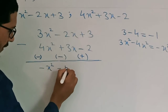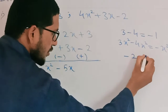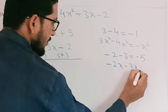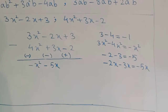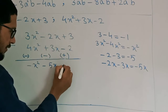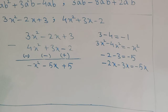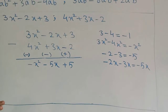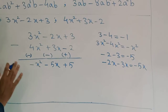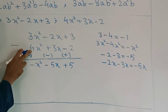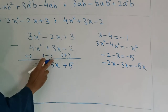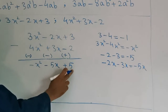So minus 2x and minus 3x: minus minus is plus, and 2 plus 3 is 5, so the result is minus 5x. Then for the constant: plus 3 and plus 2 — plus plus is plus — 3 plus 2 is 5. So the answer is: minus x² minus 5x plus 5. Just remember: minus minus is plus, plus plus is plus, minus plus is minus.